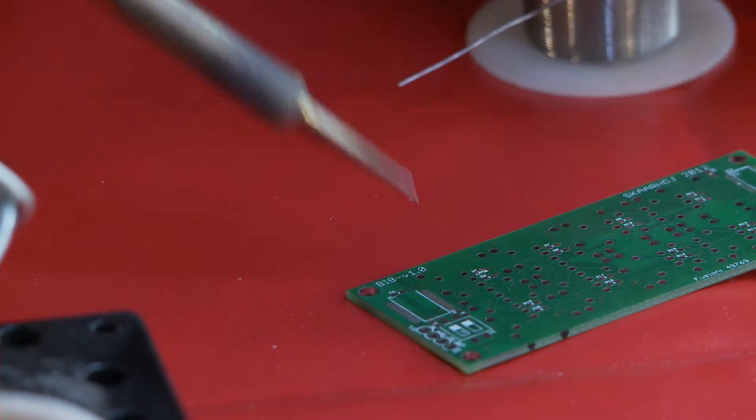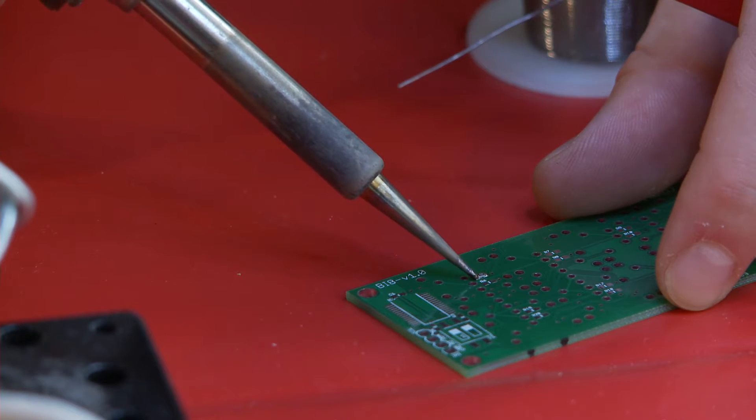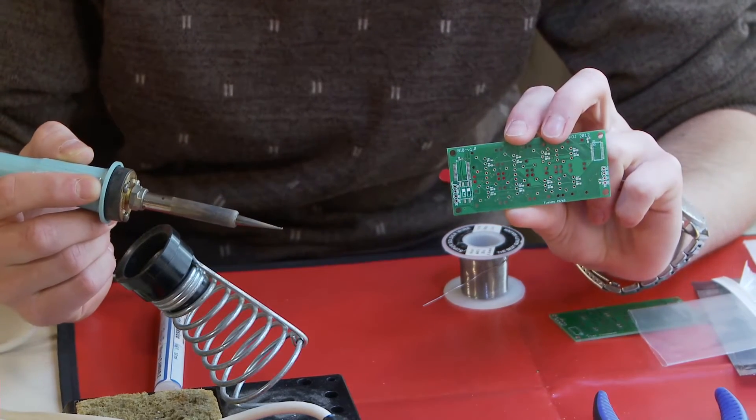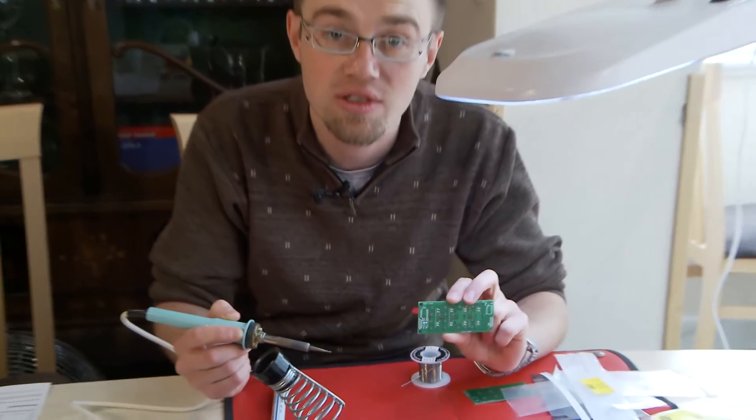Then I solder it on the other side. There we go, we have the first resistor soldered. Now I have 15 more to do of those 270 ohm resistors.